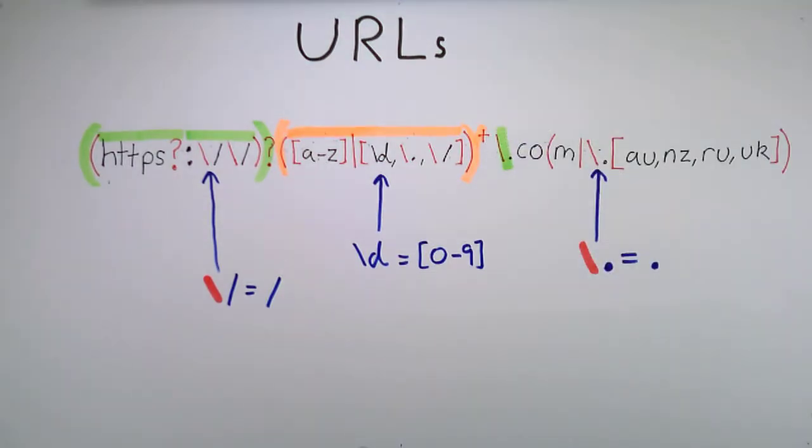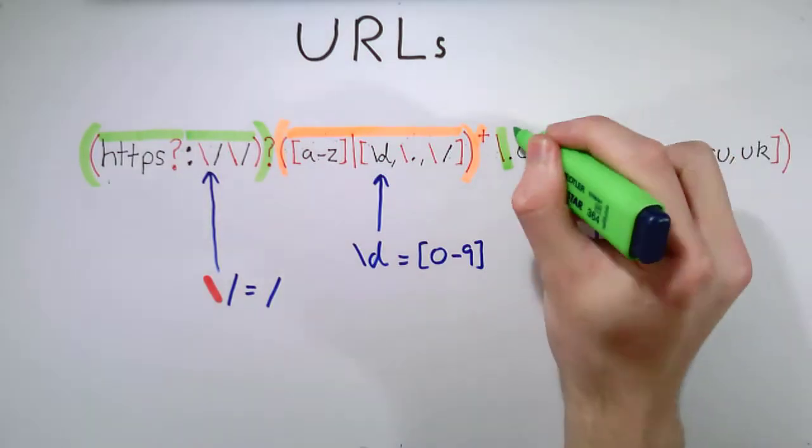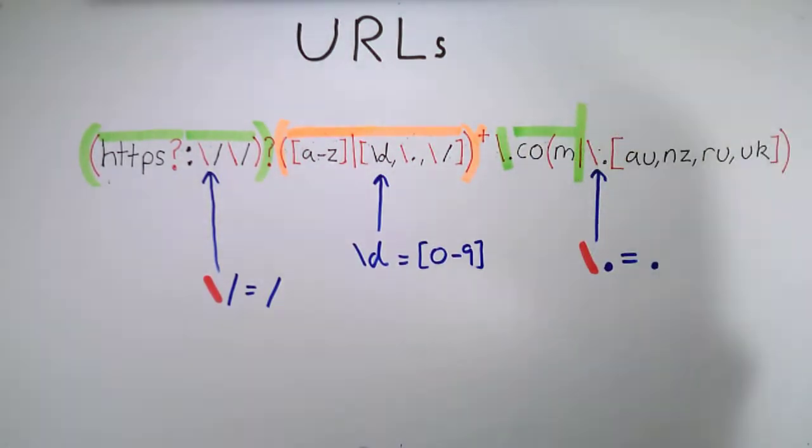After this, there is a period, then the suffix. .com is the most common example, but there are many regional alternatives, such as .co.nz for New Zealand and .co.uk for the United Kingdom.